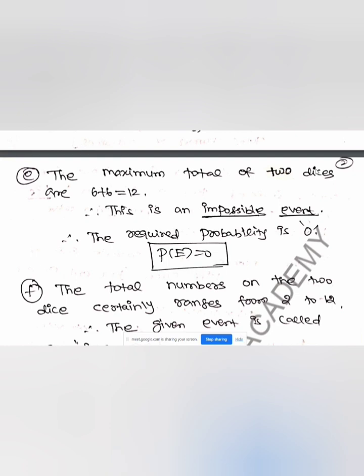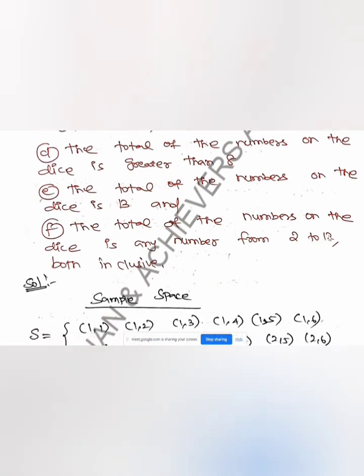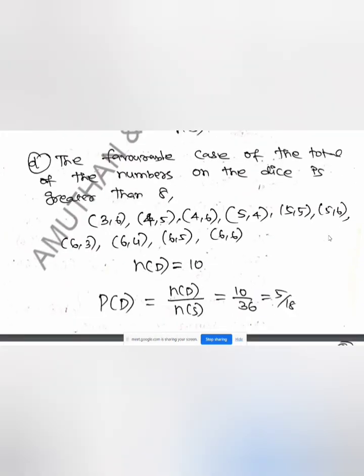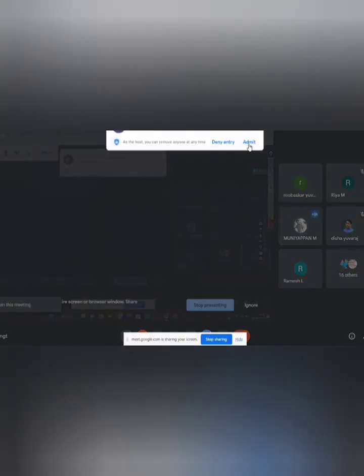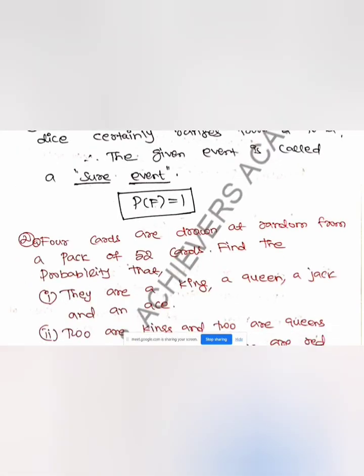What is the probability of an impossible event? Zero. Now the last problem: the total of the numbers on the dice is any number between 2 and 12, both inclusive. The minimum value is 2 and the maximum is 12. The probability is 36 by 36. What do you call this event? A sure event.